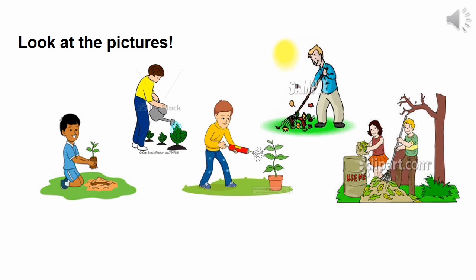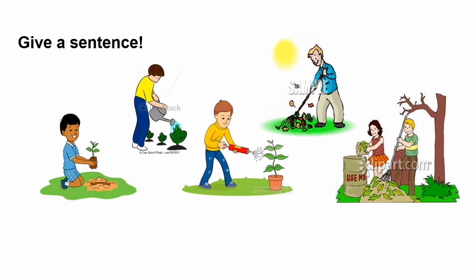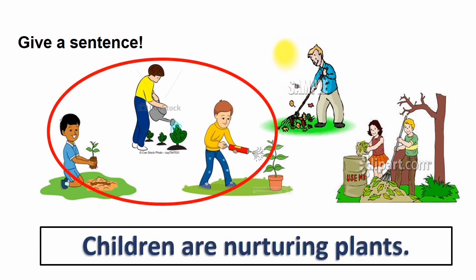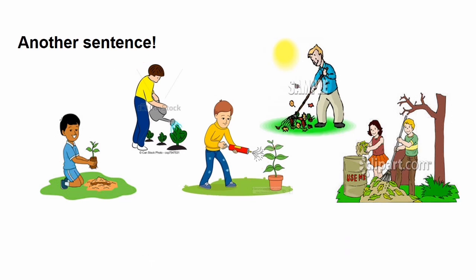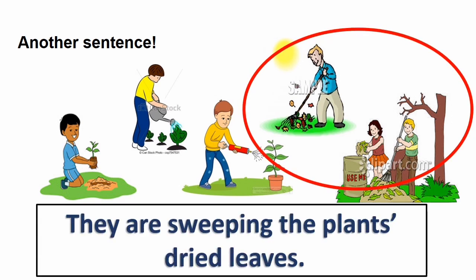Let us begin our lesson by looking at the pictures. Give a sentence from the given pictures. From the picture, we can say, children are nurturing plants. Now give another sentence. Another example sentence can be, they are sweeping the plant's dried leaves.